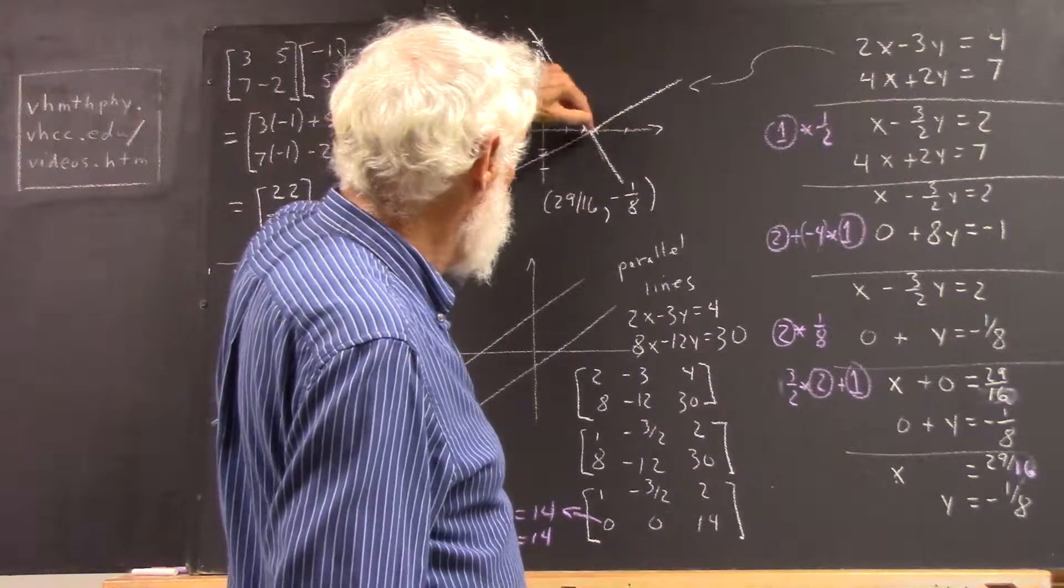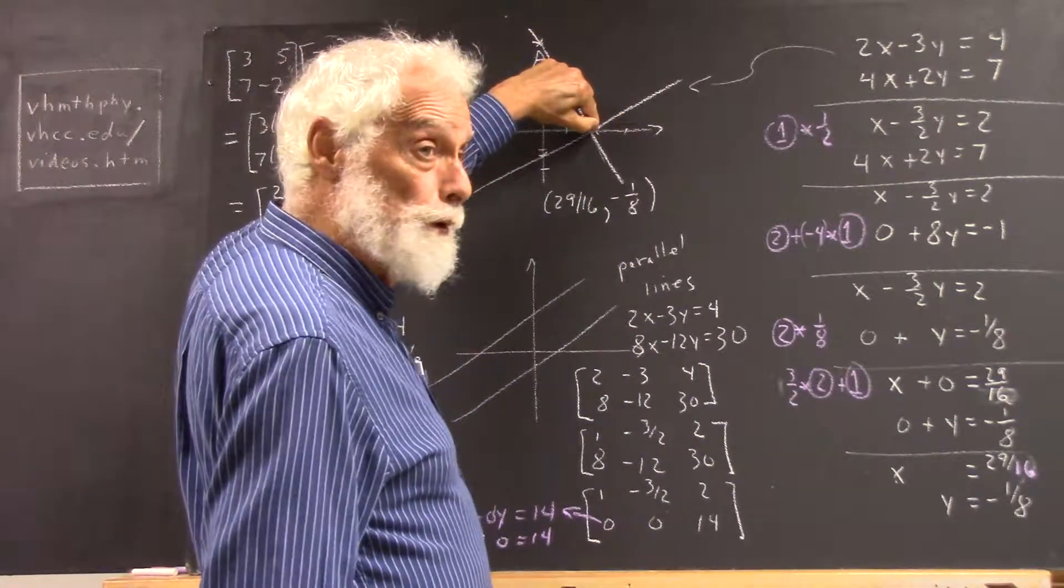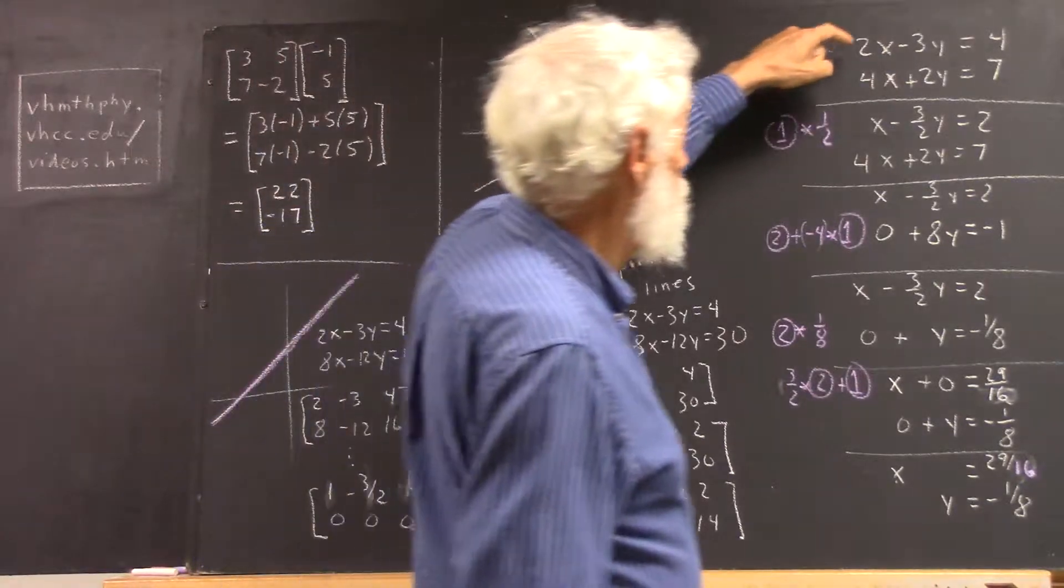So that the point 2, 0 lies on the graph. Well, here's 1, 2, 3. This x stands for the point 2, 0. It's on the graph of this equation.